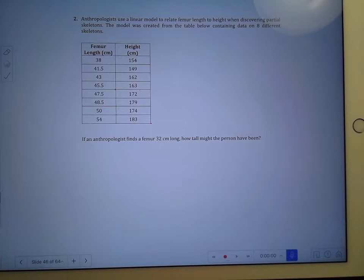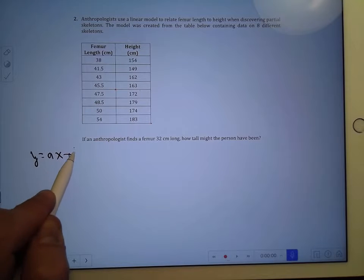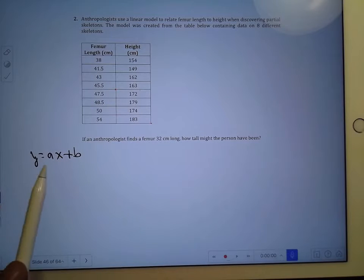And there's no way of really estimating it just from the table, so we would love to use an equation. If, for example, we knew that the height of the skeleton was equal to some rate of change times the femur length plus some starting position, y equals ax plus b.